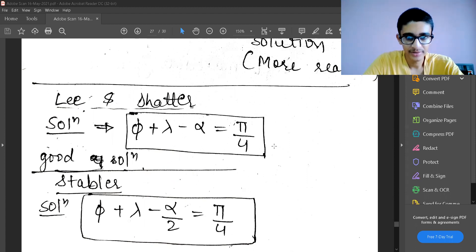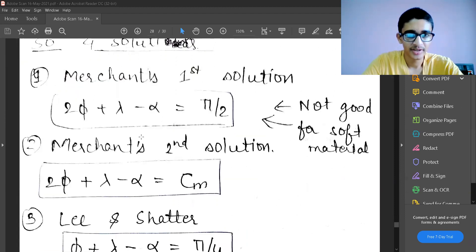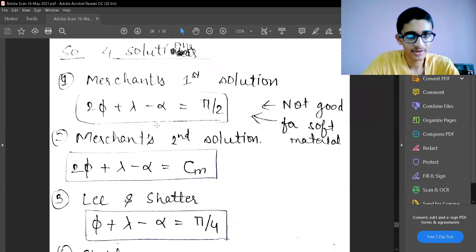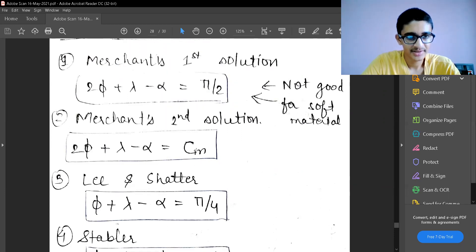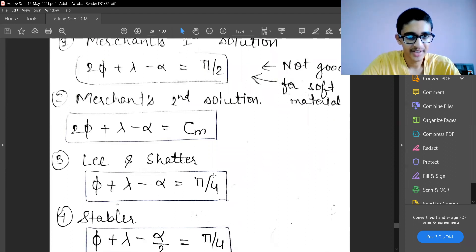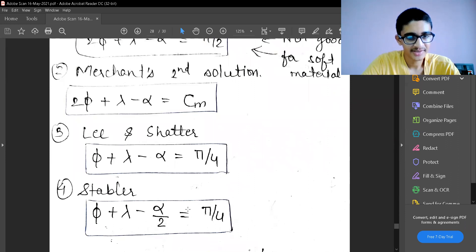Generally we use these relations to find the approximate value of φ, that is shear plane angle. This is the summary of the four solutions we have seen: Merchant's first solution, Merchant's second solution which took the material properties into account, Lee and Shaffer solution, and Stabler solution.